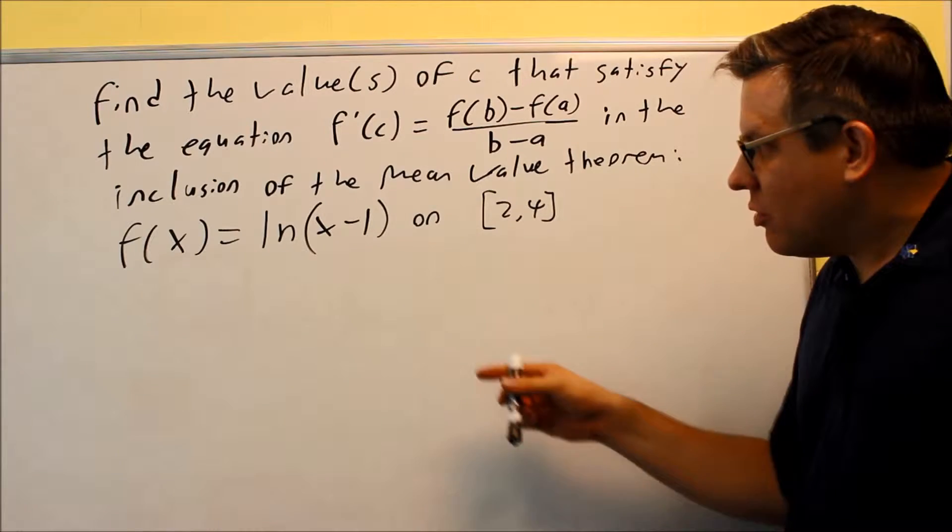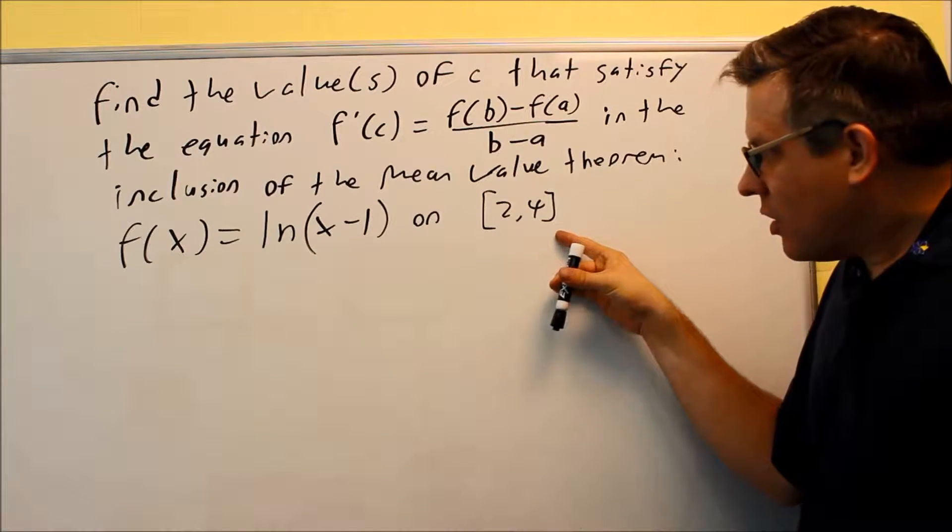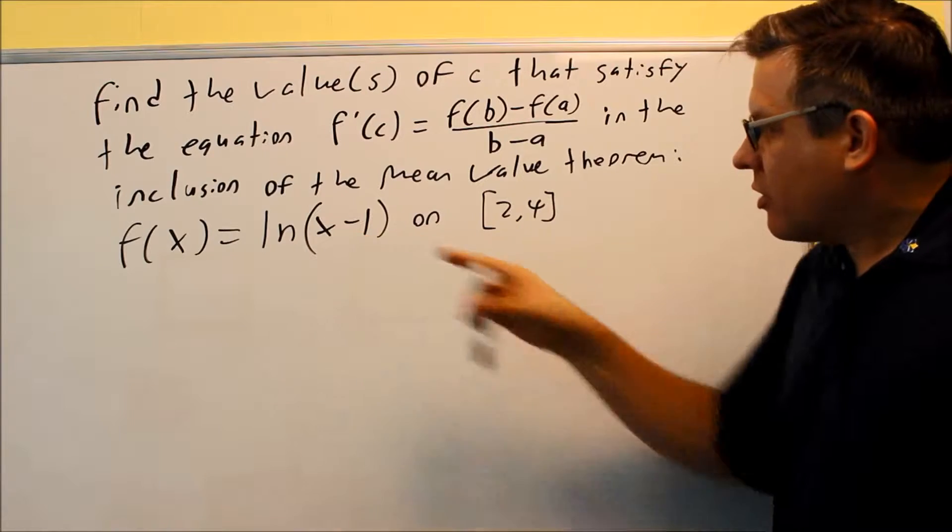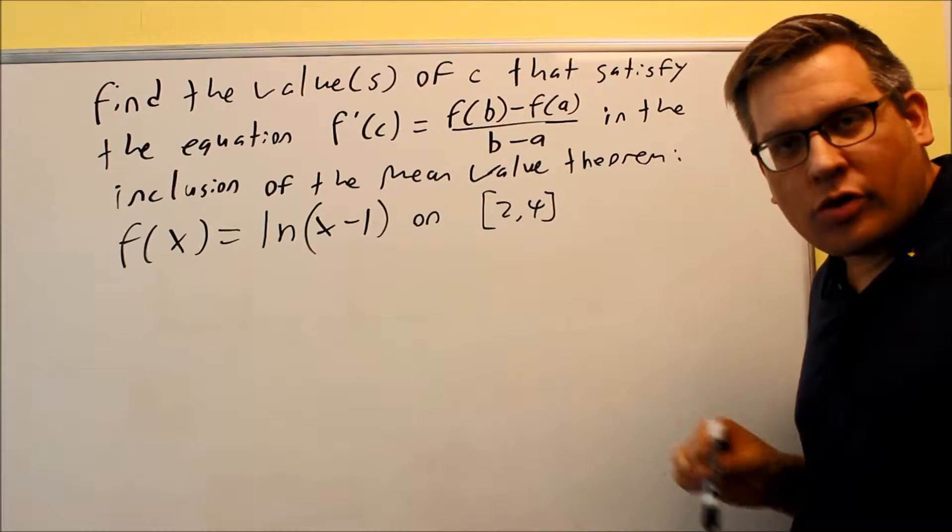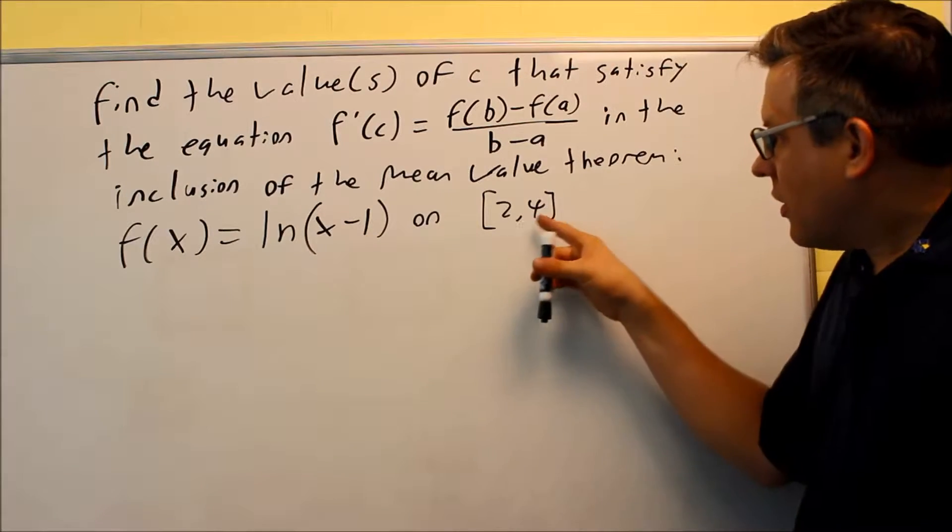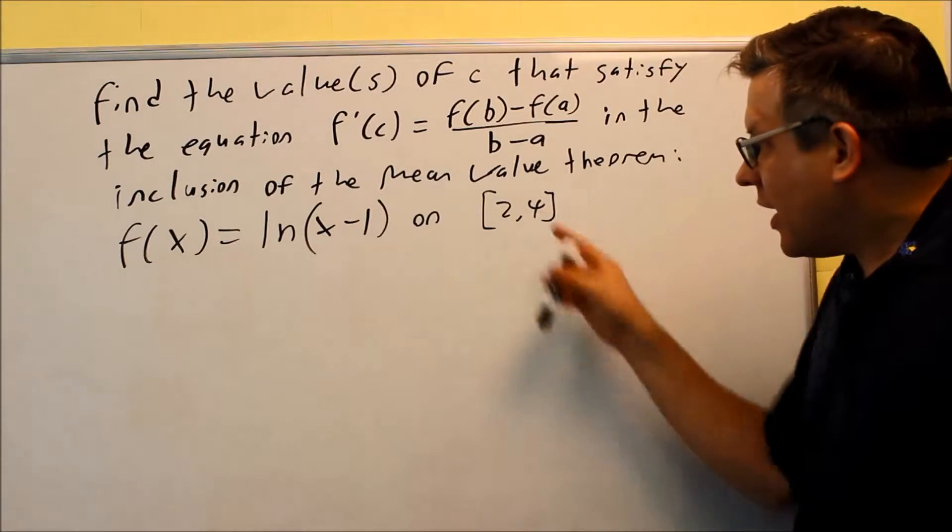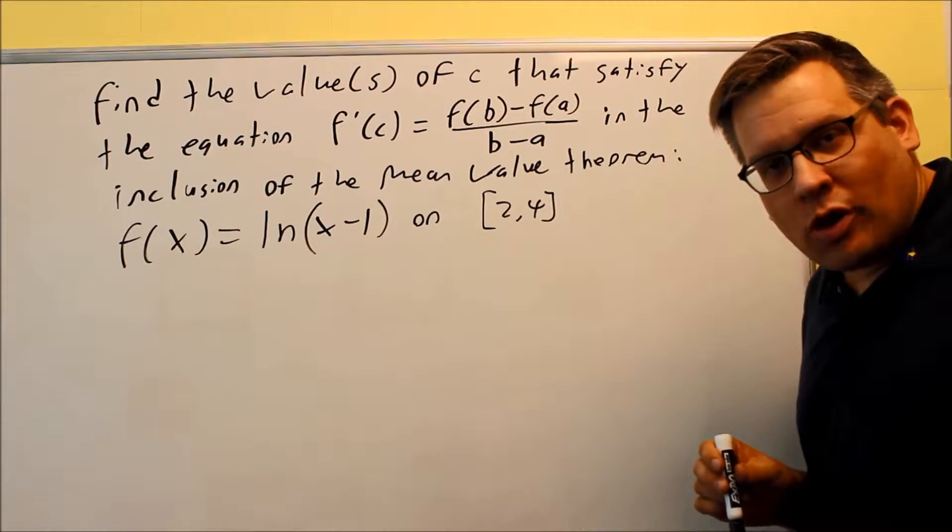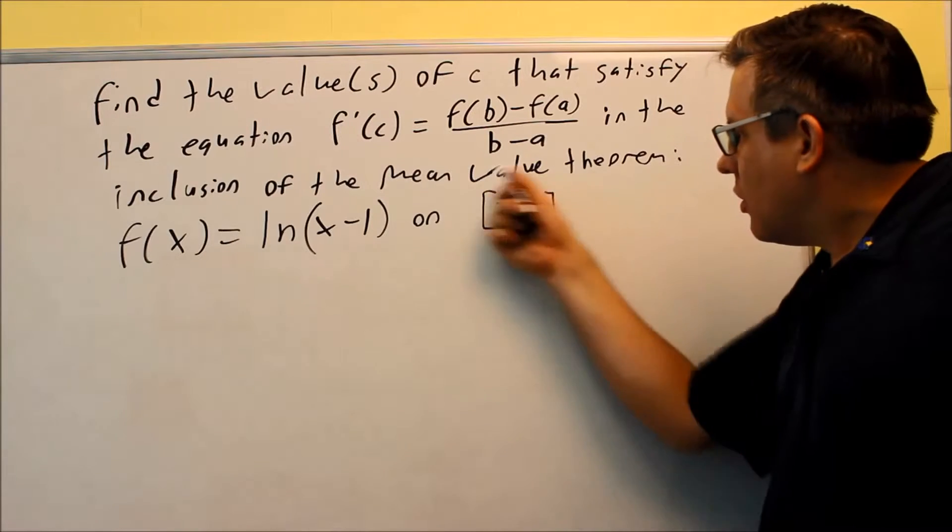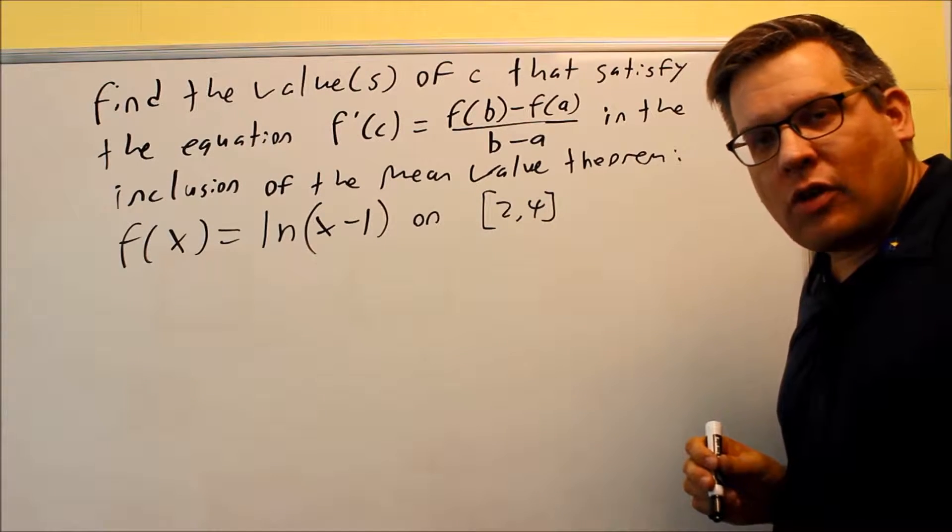Now this has to be continuous on this interval. If I put 2 in there, I get ln(1), which is 0. That's okay. If I put 4 in there, it's okay. Any number in between will also work. Therefore, we know this is continuous on the closed interval [2,4].